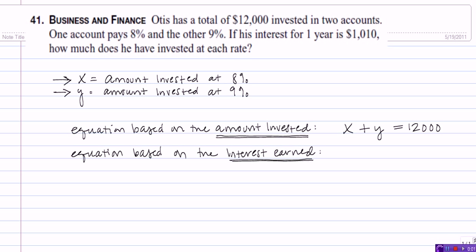Now, the second equation is based on the interest earned. The interest earned on the first account can be represented by multiplying the interest rate in decimal form times the amount invested.